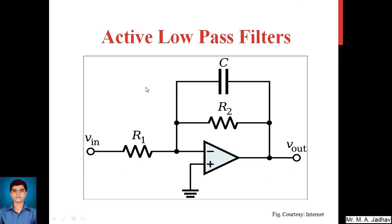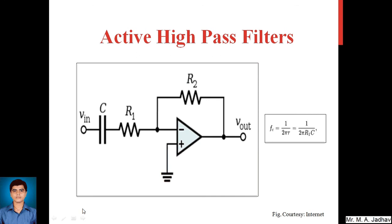The cutoff frequency here is Fc = 1 / (2πR1C), where R1 is the resistance and C is the capacitance of the capacitor. This resistor and capacitor pair allows low frequencies to reach the inverting terminal, and the output is provided with gain R2/R1. This covers the active low pass filter.